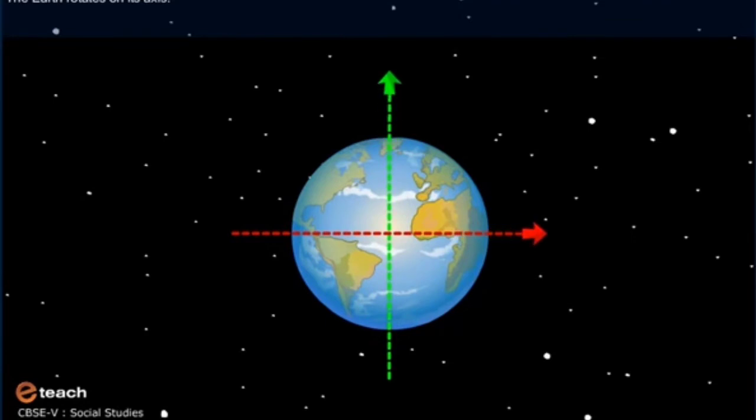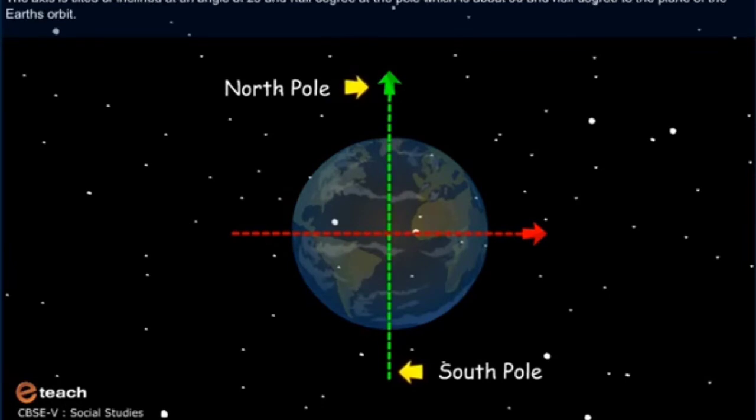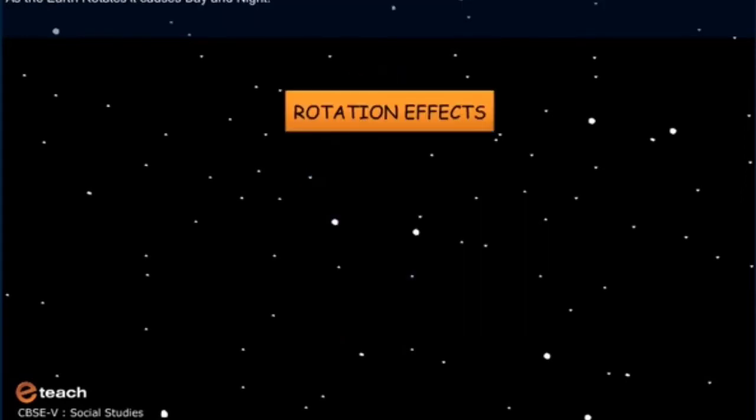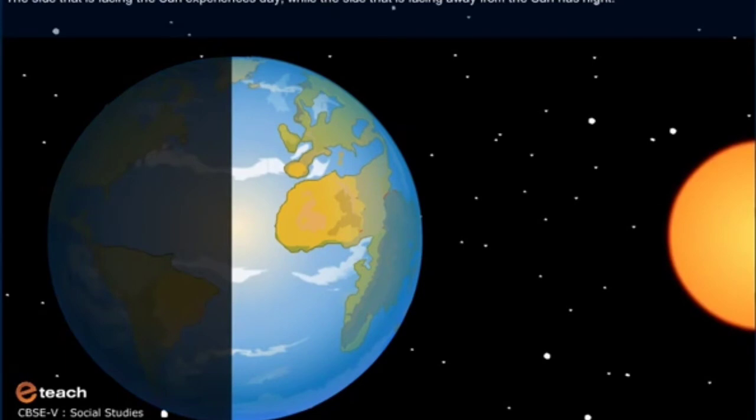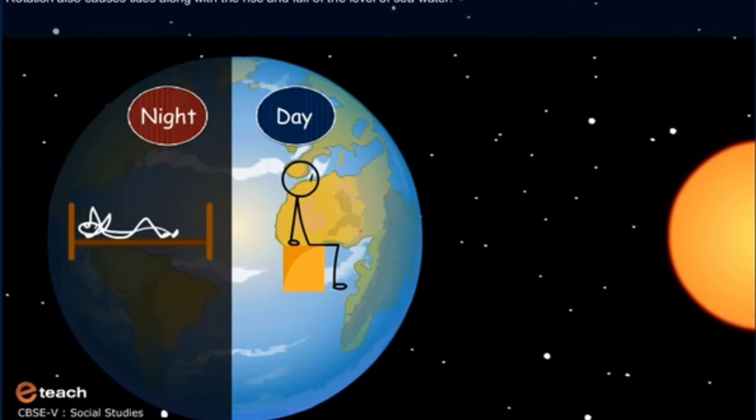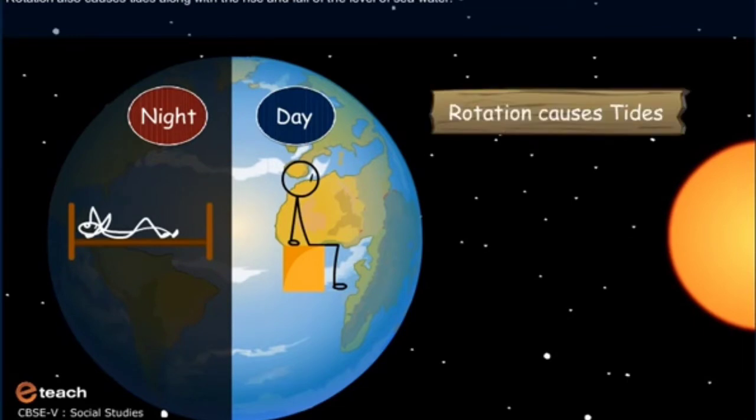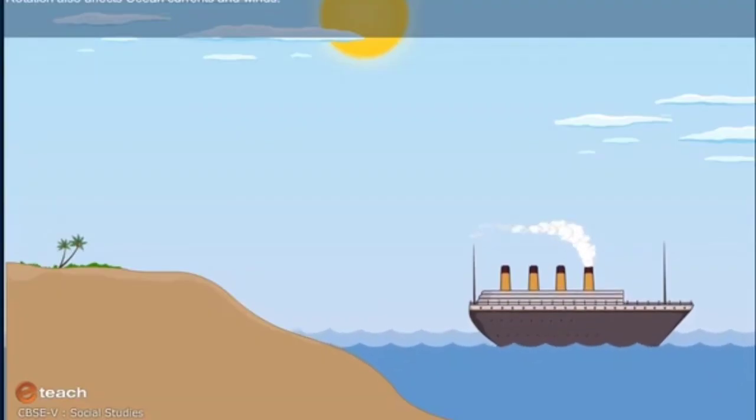The earth rotates on its axis. The earth's axis is an imaginary line that passes through the center of the earth from the north to the south pole. The axis is tilted or inclined at an angle of 23 and a half degree at the pole, which is about 66 and a half degree to the plane of the earth's orbit. As the earth rotates, it causes day and night. The side that is facing the sun experiences day, while the side that is facing away from the sun has night. Rotation also causes tides along with the rise and fall of the level of seawater. Rotation also affects ocean currents and winds.